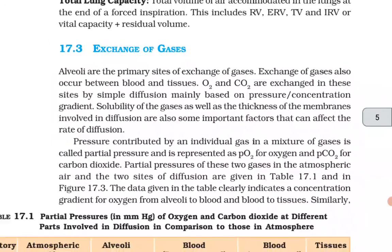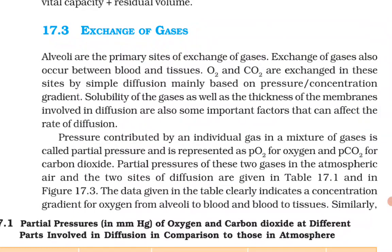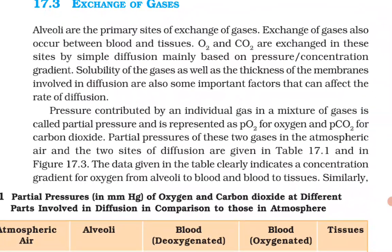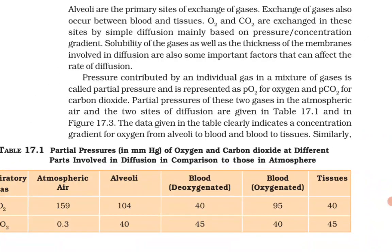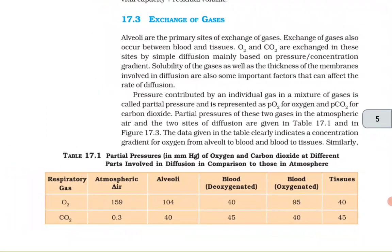17.3 Exchange of Gases. Alveoli are the primary sites of exchange of gases. Exchange of gases also occurs between the blood and tissues. O2 and CO2 are exchanged at these sites by simple diffusion, mainly based on pressure/concentration gradients. Solubility of gases as well as thickness of the membranes involved in diffusion are also important factors. Pressure contributed by an individual gas in a mixture is called partial pressure — represented as pO2 for oxygen and pCO2 for carbon dioxide. The data clearly indicates a concentration gradient for oxygen from alveoli to blood and blood to tissues.